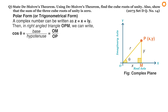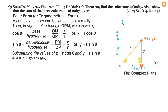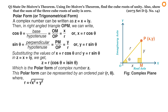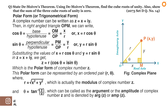In right angle triangle OPM, we can write: cosine theta equals OM divided by OP which equals x divided by r, so x equals r cos theta; and sine theta equals y divided by r, so y equals r sin theta. Substituting x equals r cos theta and y equals r sin theta into z equals x plus iy, we get z equals r times (cos theta plus i sin theta), which is the polar form of the complex number. This polar form is represented by the ordered pair (r, theta), where r equals the square root of x² plus y², which is the modulus of z, and theta equals tan inverse (y divided by x), called the argument or amplitude of z, denoted arg(z) or amp(z).